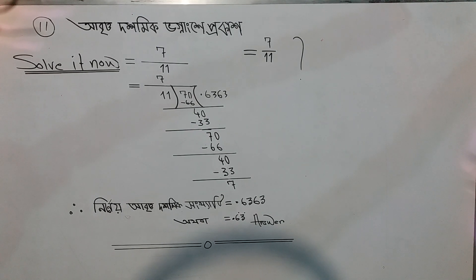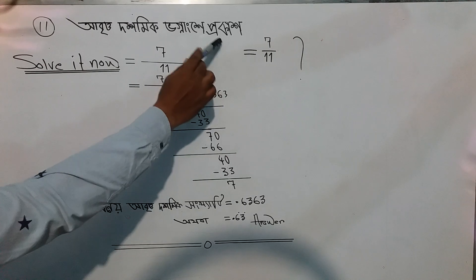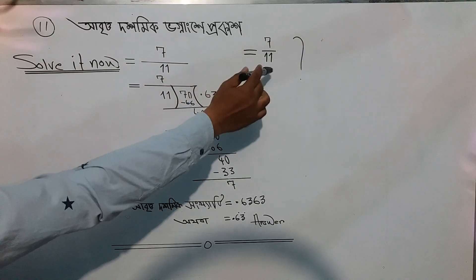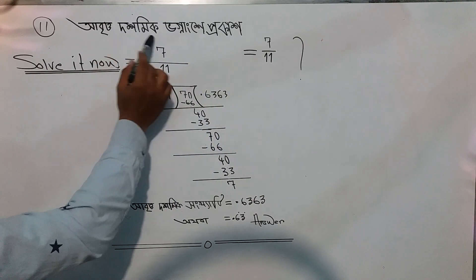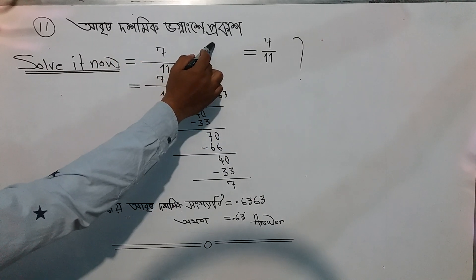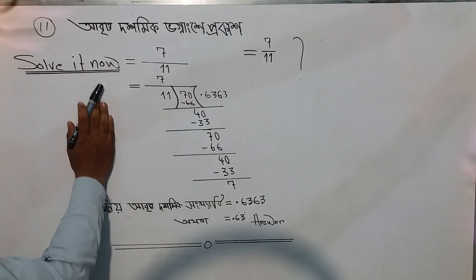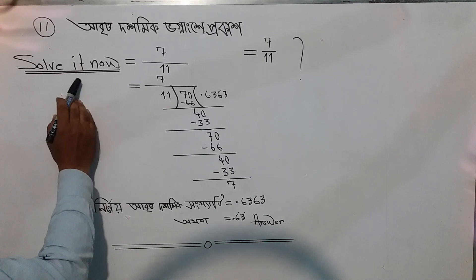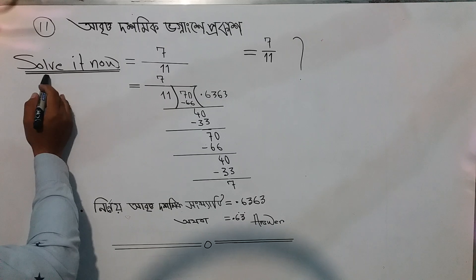We need to express this as a recurring decimal fraction. So seven divided by eleven - we need to express as a recurring decimal fraction. We are presenting this math, so we can follow this on the board. We can solve it at this moment.